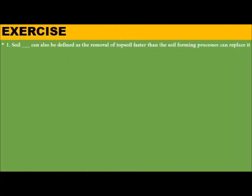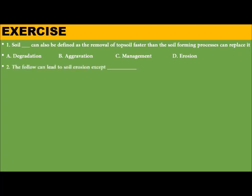Exercise. Question 1: Soil dash can be defined as the removal of topsoil faster than the soil-forming processes can replace it. A. Degradation. B. Aggravation. C. Management. D. Erosion. Question 2: The following can lead to soil erosion except dash. A. Overgrazing. B. Crop rotation. C. Bush burning. D. High precipitation.